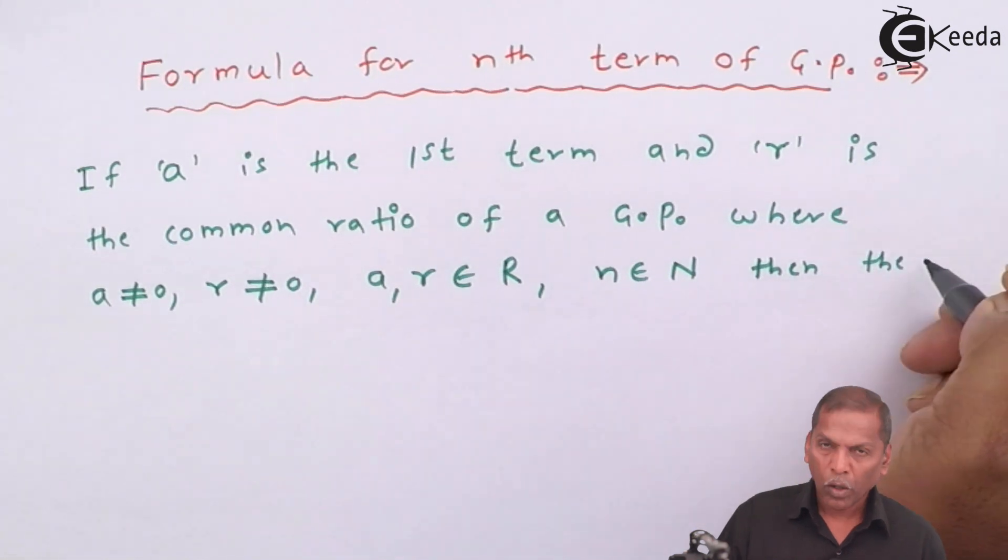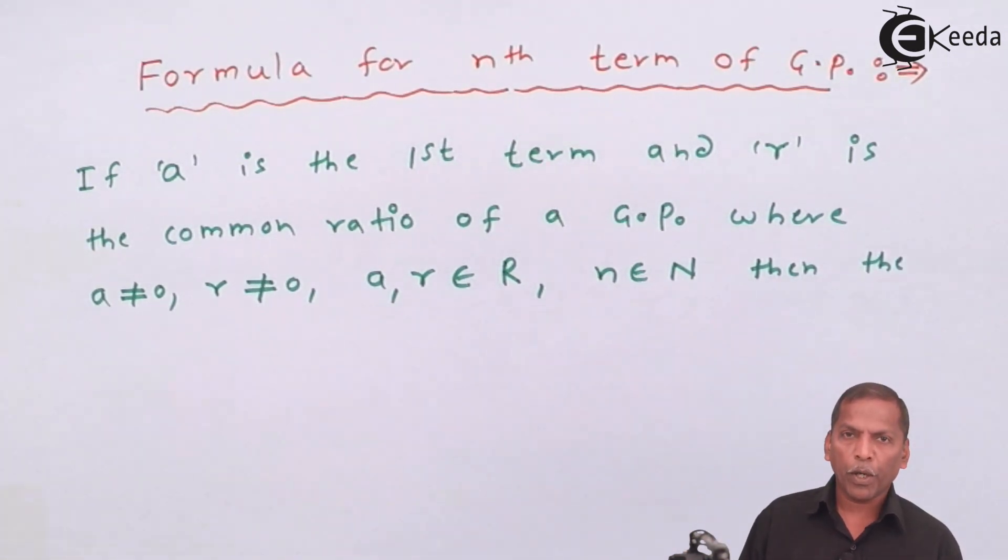Then the nth term of GP is given by Tn equals a into r raise n minus 1.